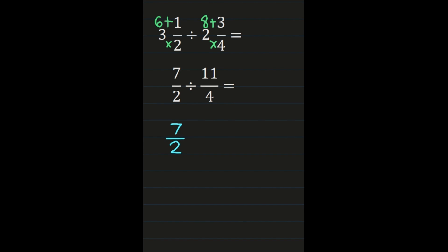So 7 halves is going to remain exactly the same. We're going to turn the division sign into a multiplication sign and we're multiplying by the reciprocal of 11 fourths, which is 4 elevenths. Notice that 2 and 4 share a common factor of 2, so we can simplify before we multiply: divide 2 by 2 to get 1, and divide 4 by 2 to get 2. Then numerator times numerator: 7 times 2 is 14. And denominator times denominator: 1 times 11 is 11.